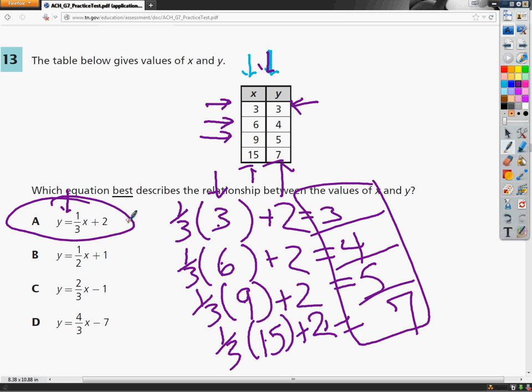Now, if one of them didn't work, I would have to start over. I would go to 1 half X plus 1 and plug in a 3 for X and see if I get 3. I'd plug in a 6 for X and see if I got a 4. You just go through all of the sets and find the one that matches up.